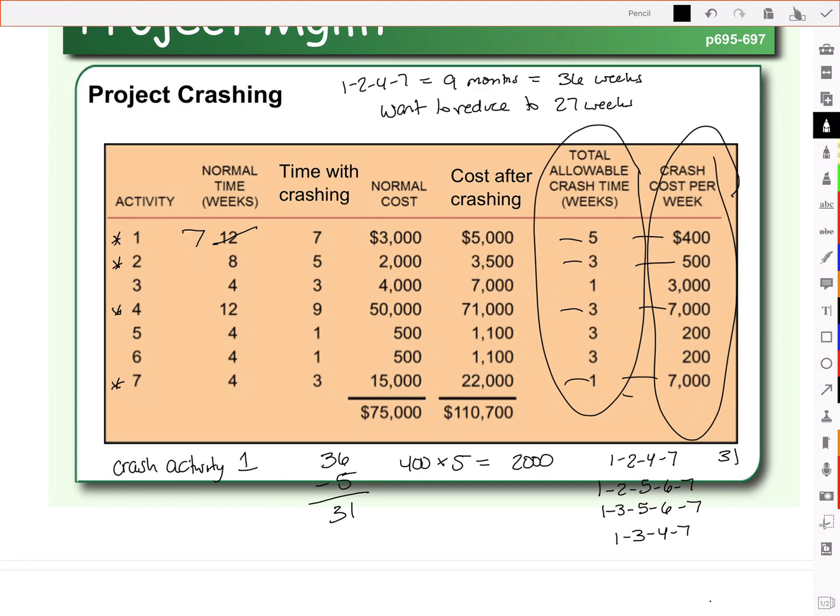Well, 1, 2, 5, 6, 7, if you recall, took 8 months. So, 32 weeks. And activity 1 has just been reduced by 5 months. So that's 32 minus 5. And it is now 27.